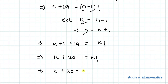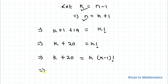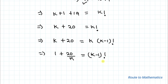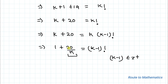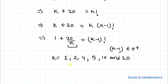We can write k + 20 = k × (k−1)!. Dividing both sides by k gives 1 + 20/k = (k−1)!. Since (k−1)! cannot be a negative integer, k must divide 20. The possible values of k are 1, 2, 4, 5, 10, and 20.